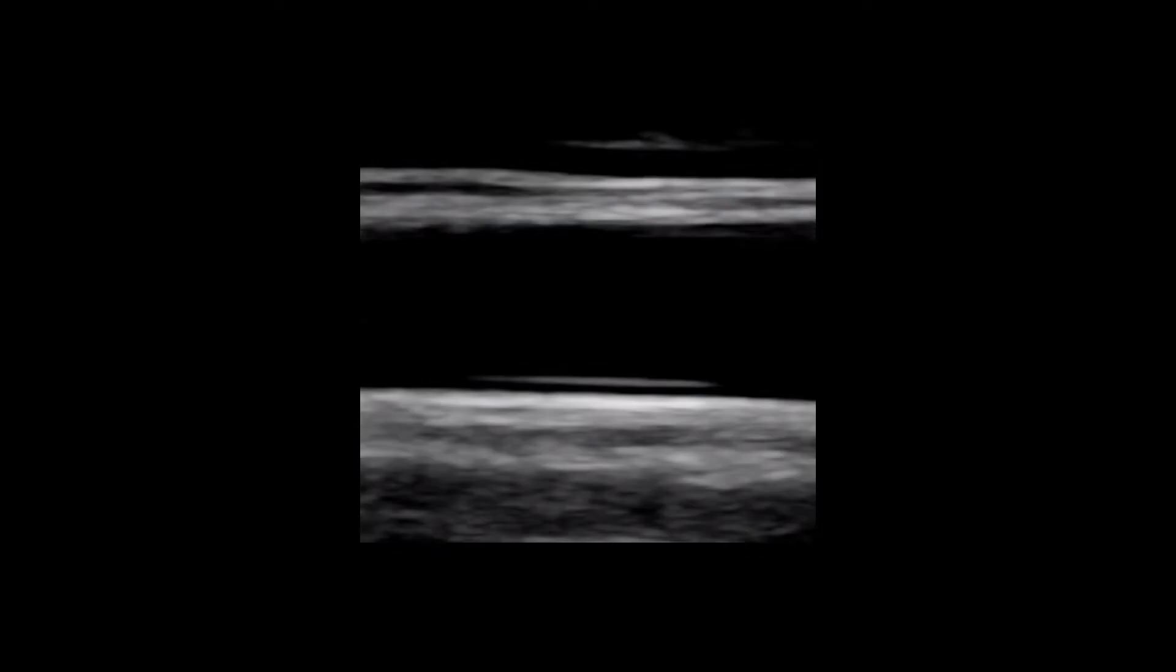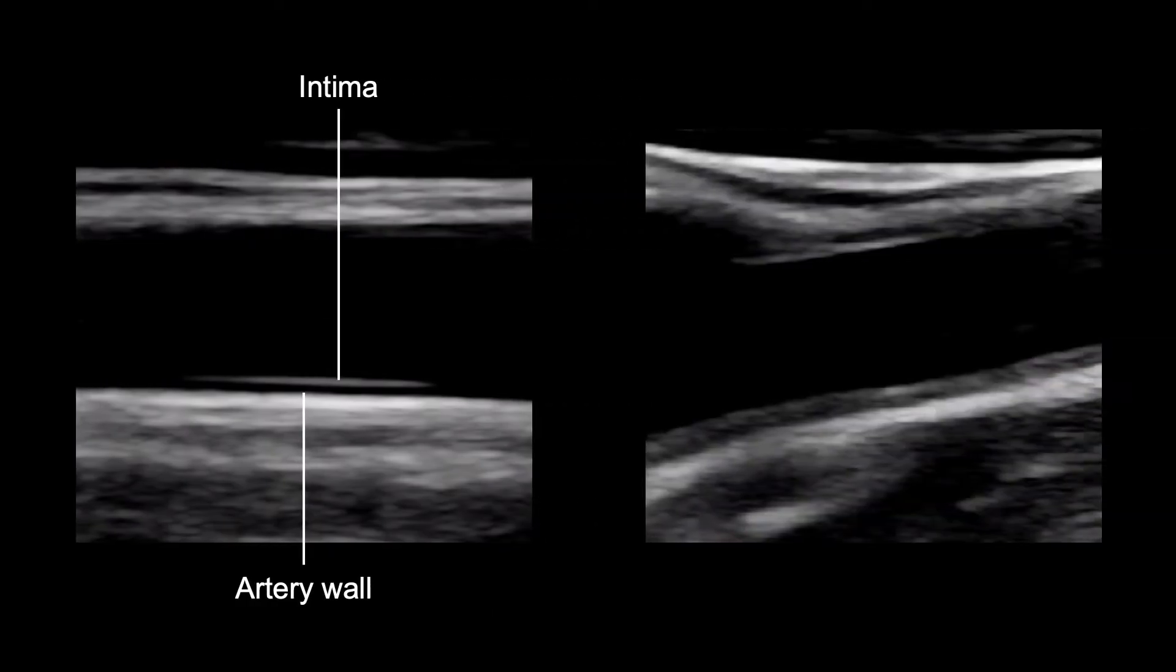The B-mode image provides a lot of useful information. In the normal CCA we saw that there is a clear gap between the intima and media in the walls of the artery. Early disease in the carotid territory can be recognized by thickening of the intimal layer which causes the clear gap to disappear. This can be visualized and documented with a high frequency probe.